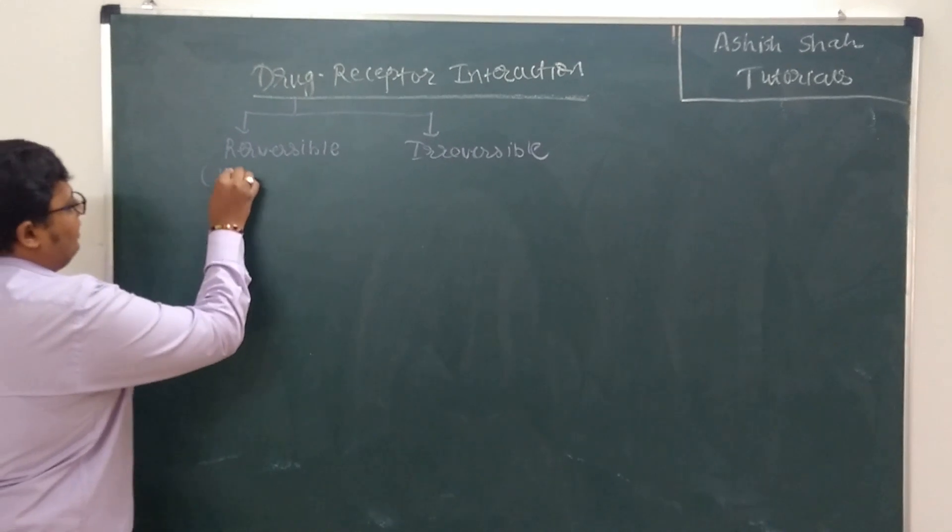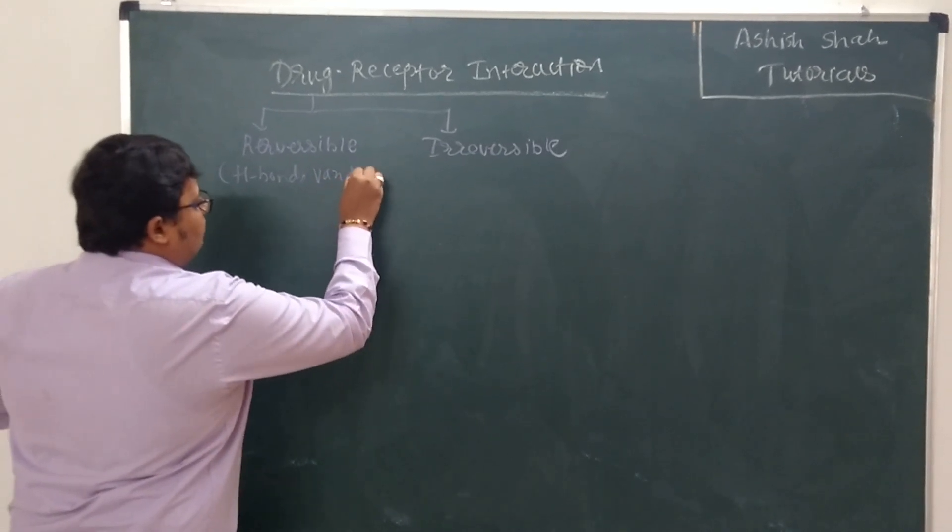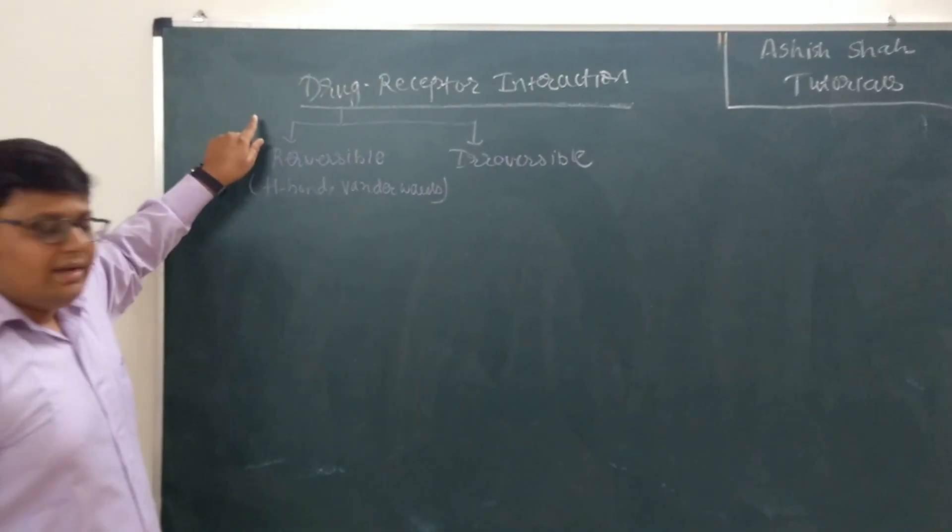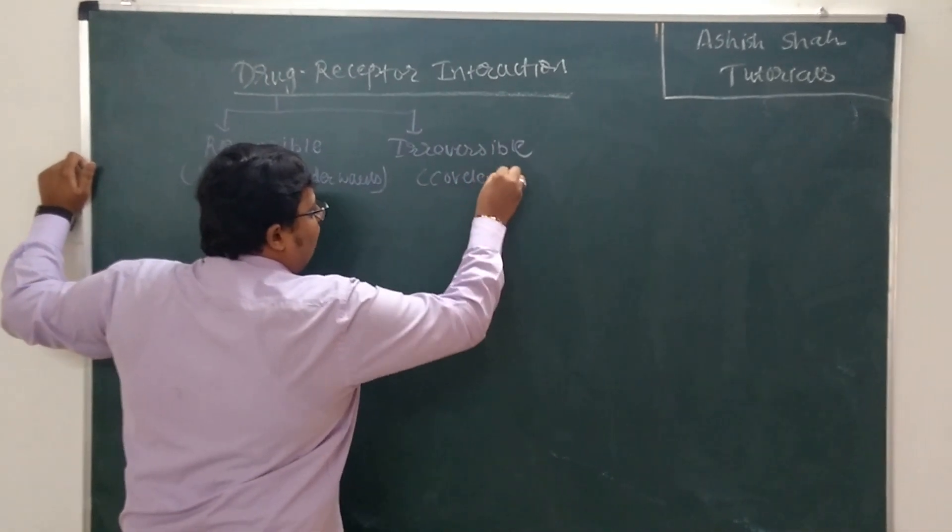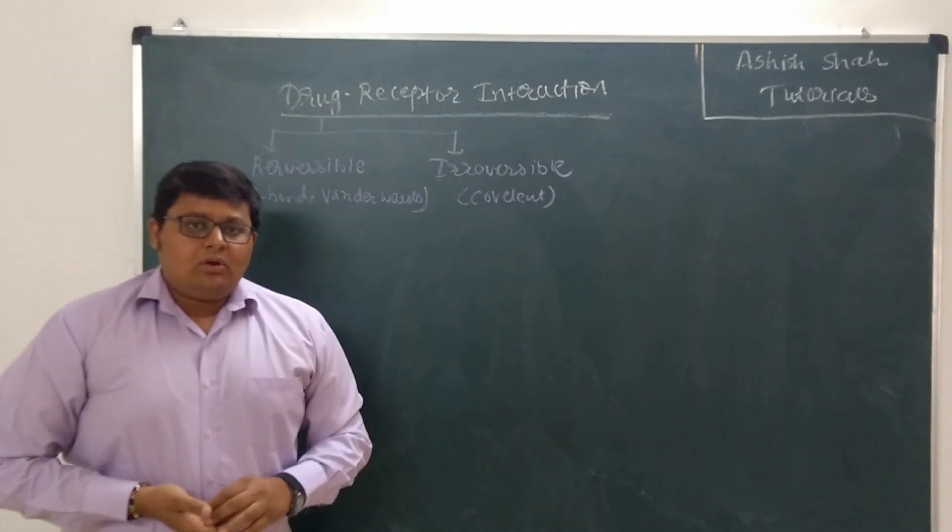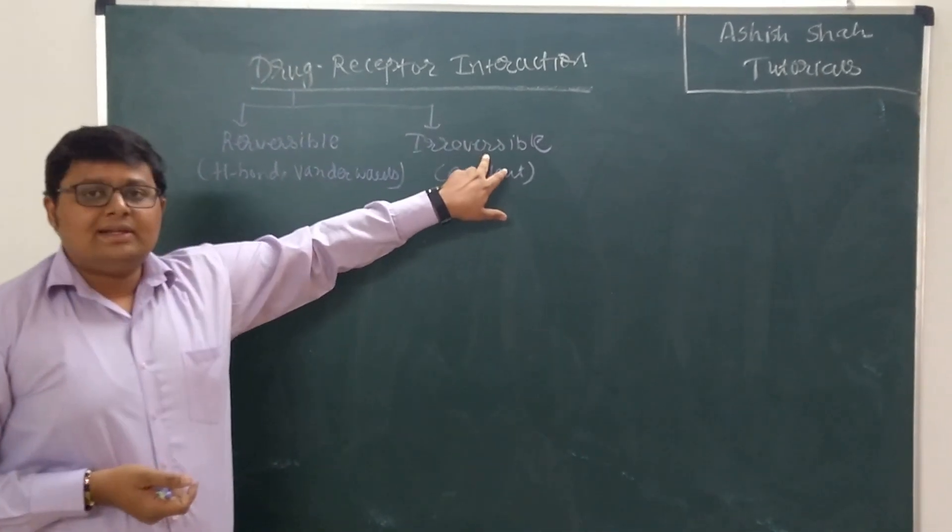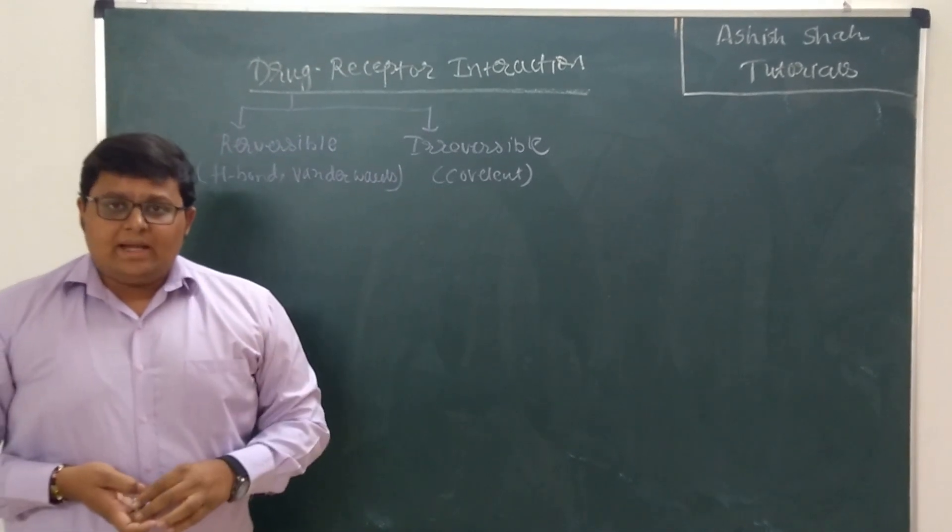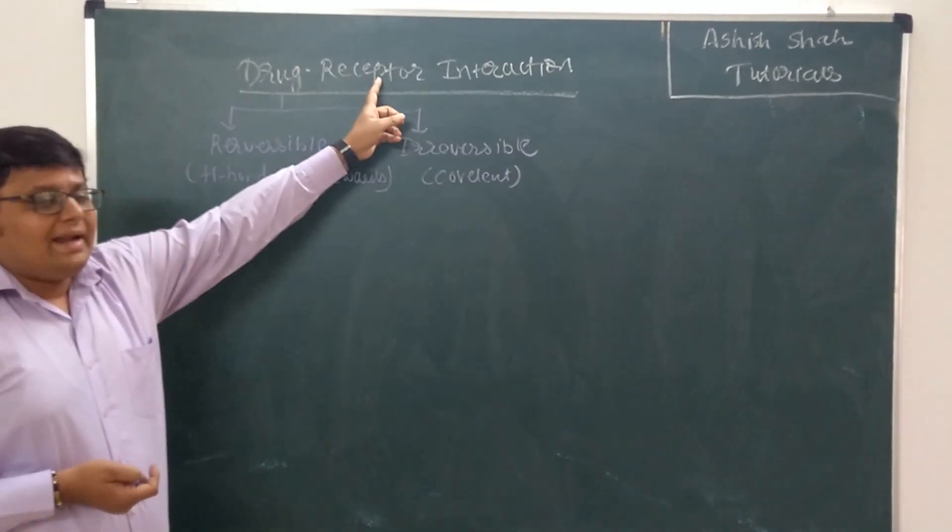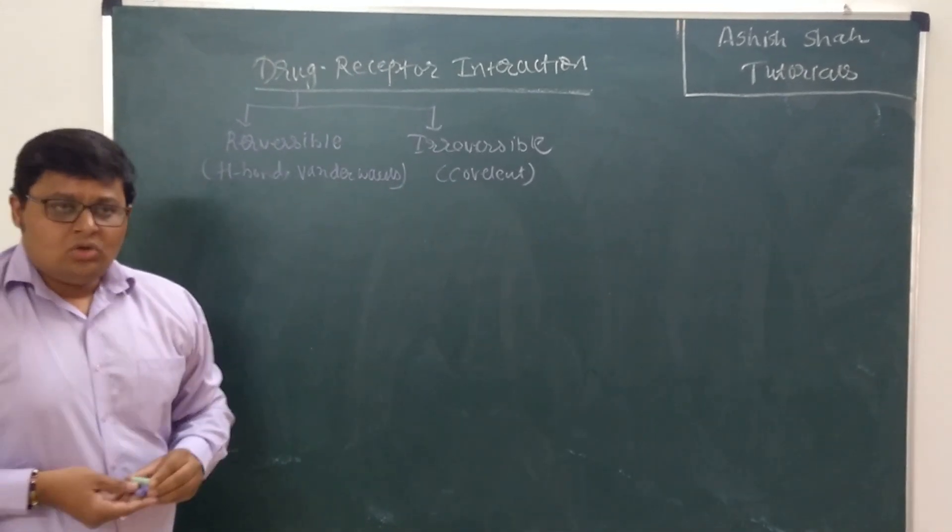This reversible binding occurs due to the hydrogen bonding, for example. It can be due to the electrostatic bonding. So these types of forces are responsible for the reversible binding. Here, covalent binding is responsible for the irreversible binding. Now how this binding occurs. What are the different types of forces which are involved in the receptor interaction?